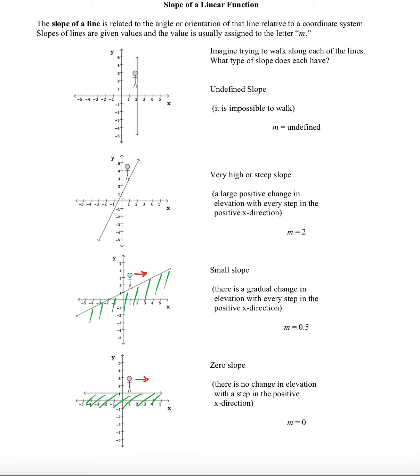Now we see that for this line, there's a small slope, and there's a gradual change in elevation with every step in the positive x direction. So instead of having a slope of zero, this line here has a slope of 0.5, which is fairly small.